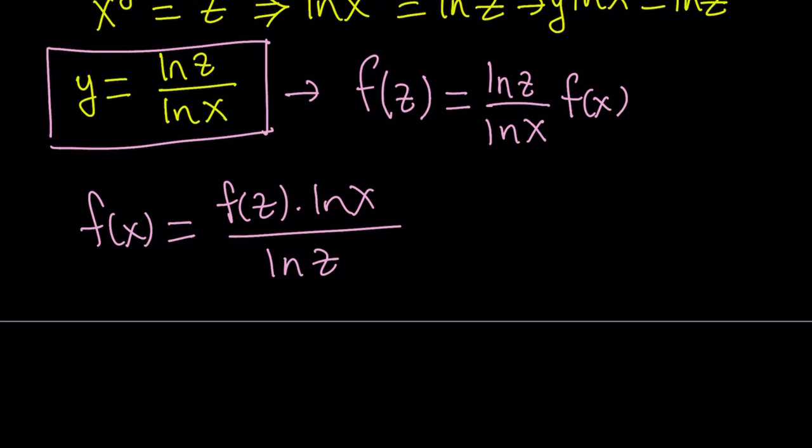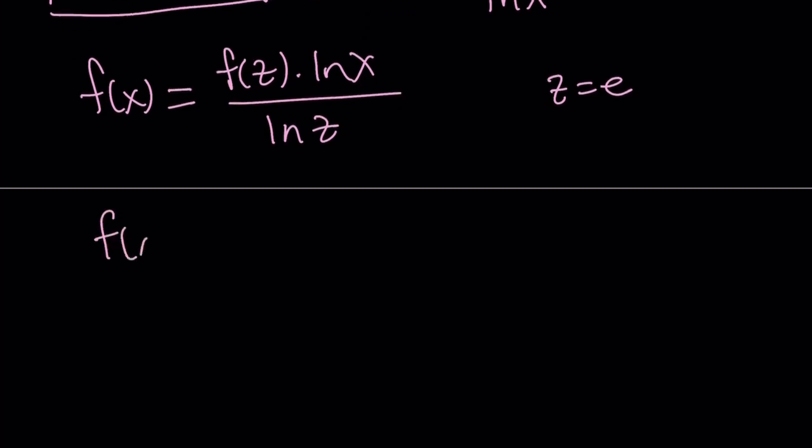We can replace z with e, Euler's number. And when we do that, something interesting happens. We get f of e multiplied by ln x, which is dependent on x, divided by ln z, which is 1. So I don't have to worry about it. We get the following: f of e times ln x.